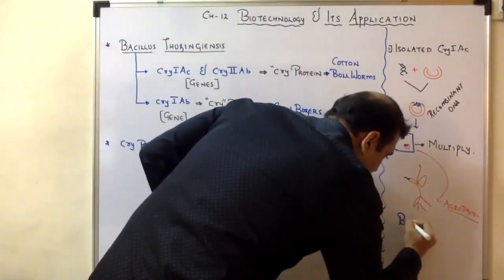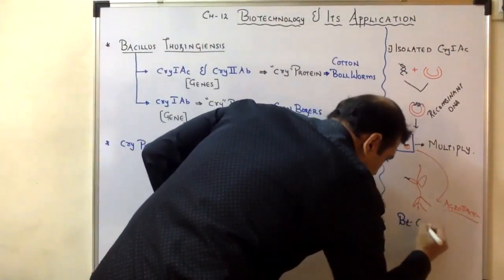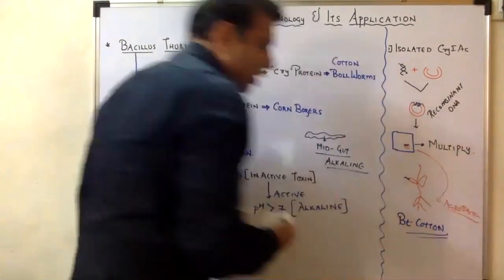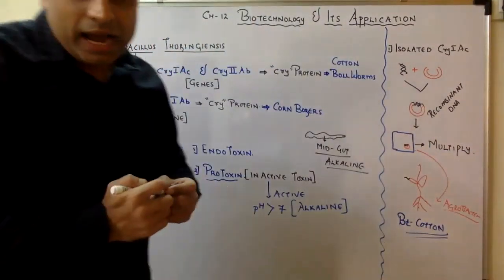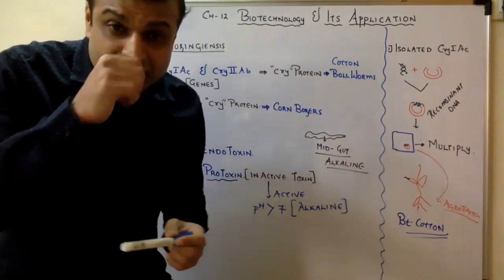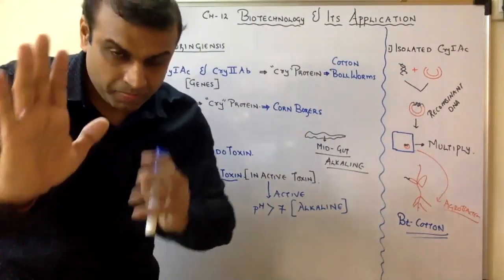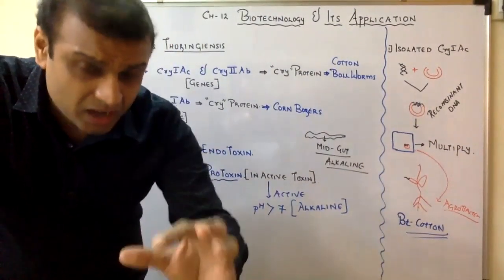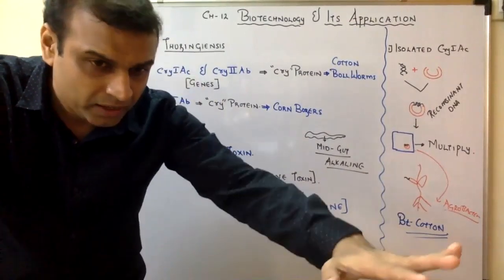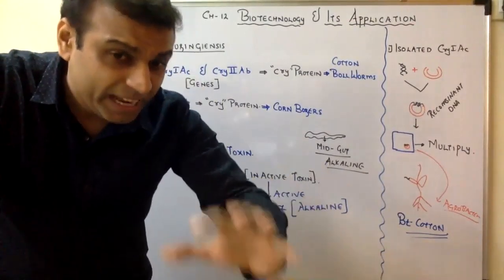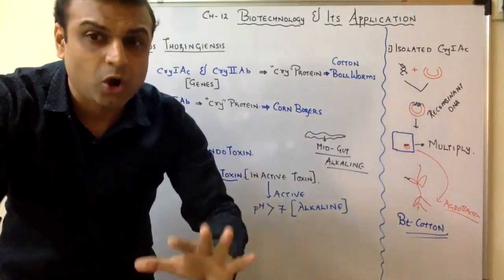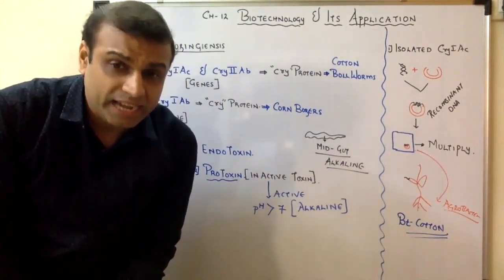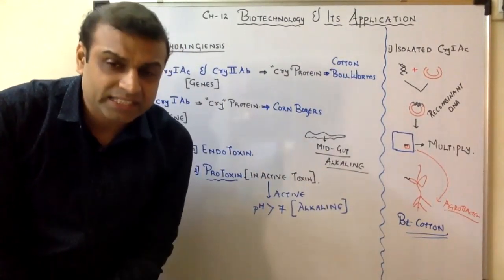The crystalline protein has bound to and destroyed the bollworm's intestine, and the cotton plant is now called BT Cotton. We have successfully produced BT Cotton, which we can also call insecticidal cotton — insecticidal meaning able to kill insects.